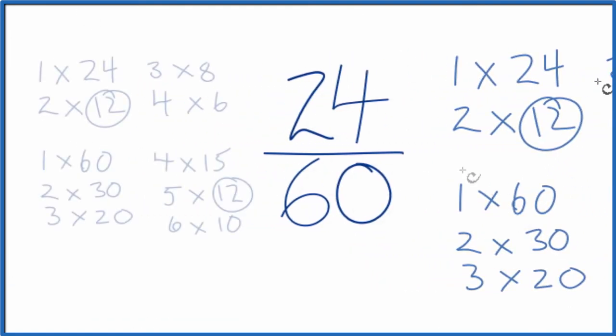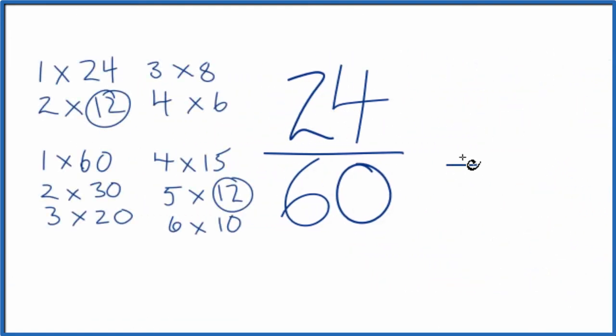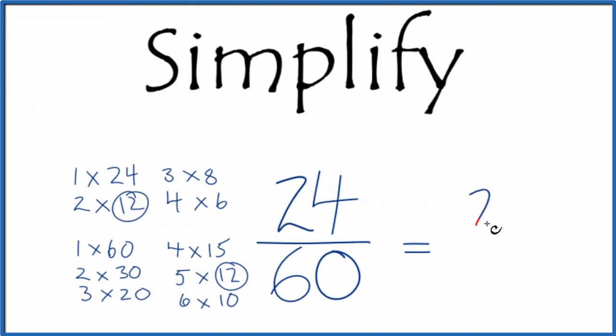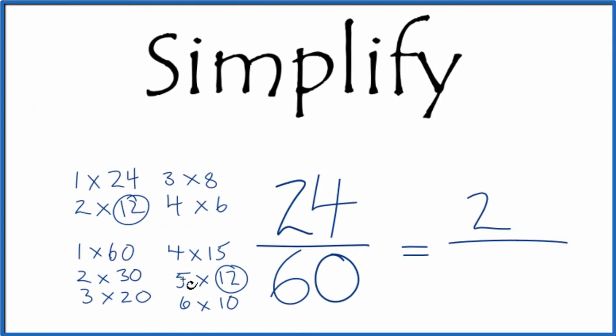Let's move this over here. So 24 divided by 12, that's 2, and then 60 divided by 12, that's 5. So we've simplified the fraction 24/60 down to 2/5, and we can't reduce this any further.